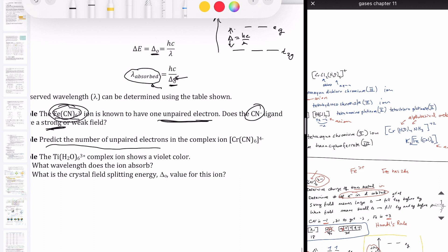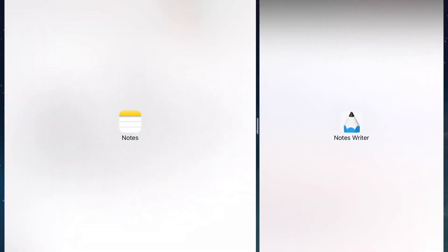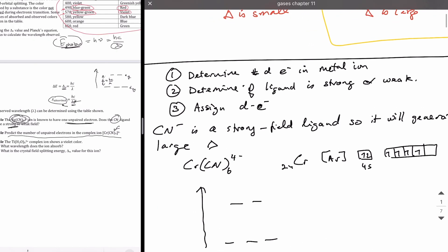Let's take a look at the second question. It says predict the number of unpaired electrons in the complex ion [Cr(CN)₆]⁴⁻. So this is your cyano complex again, but now with chromium as your metal. How do we do this? Very similar to the previous question. We're going to first look at how many electrons is present in the metal ion. My ligand is CN minus, and there's six of them. That's negative six. My total is minus four. So that means my Cr must be plus two.